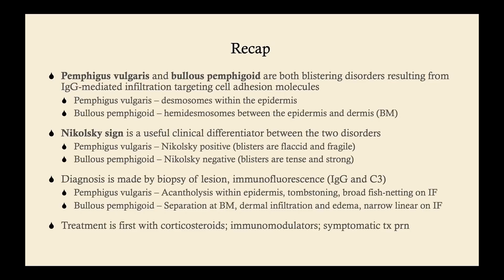To recap: pemphigus vulgaris and bullous pemphigoid are both blistering disorders resulting from IgG-mediated infiltration targeting cell adhesion molecules. Pemphigus vulgaris targets desmosomes; bullous pemphigoid targets hemidesmosomes. Nikolsky sign differentiates them — pemphigus vulgaris is positive, bullous pemphigoid is negative. Diagnosis is by biopsy with immunofluorescence looking for IgG and C3. Pemphigus vulgaris shows acantholysis, tombstoning, and broad fishnetting on immunofluorescence, whereas bullous pemphigoid shows basement membrane separation, dermal infiltration, edema, and narrow linear staining. Treatment is corticosteroids first, with immunomodulators for steroid sparing and symptomatic treatment as needed.